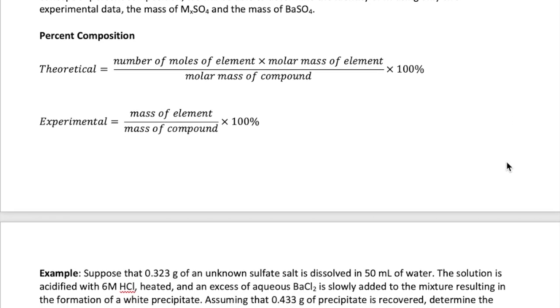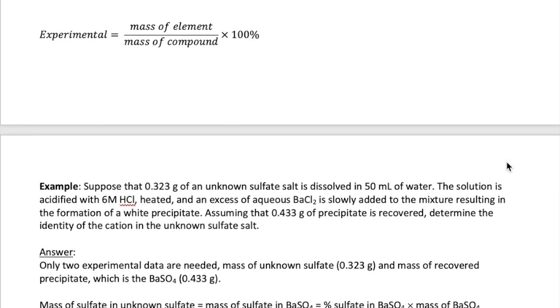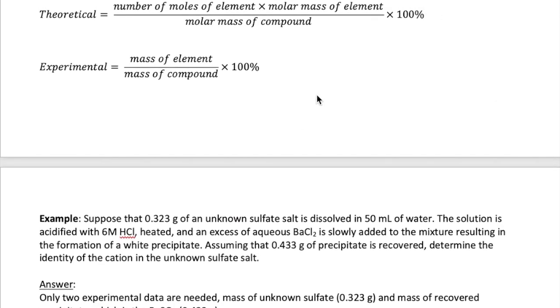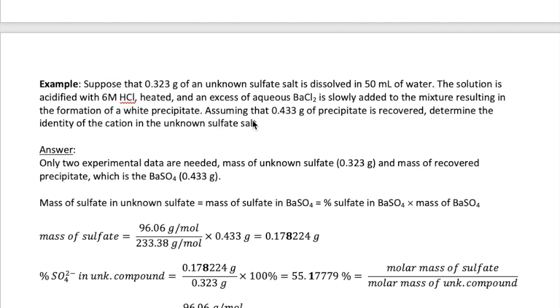Now I will show you how you use these two definitions to help us determine the identity of the metal cation M in our unknown sulfate salt using this example. Here we measure 0.323 grams of the unknown sulfate salt and react it to form 0.433 grams of a precipitate. Remember that the precipitate is our barium sulfate as the equation above shows. You may wonder about the other pieces of information given here, the 50 milliliter of water and the 6 molar HCl. Both of these are experimental conditions that don't affect our calculation. To determine the identity of the cation we just need the two masses.